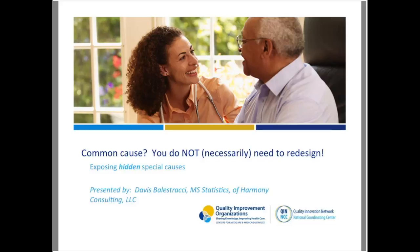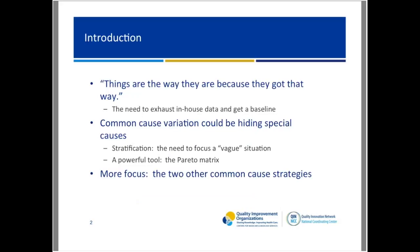Common cause can sometimes hide very serious special causes — the problem is they're aggregating predictably to make it look like common cause. The whole goal here is to take common cause and expose, if possible, the hidden special causes underneath it. I'm going to show you the importance of respecting the wisdom that things are the way they are because they got that way. Unless you understand how they got that way, they're perfectly vested in staying that way.